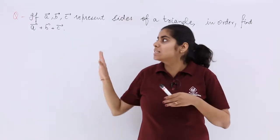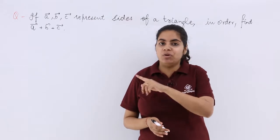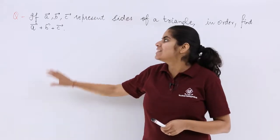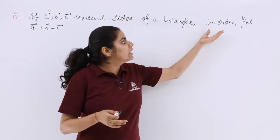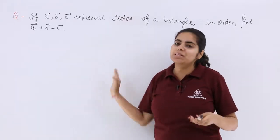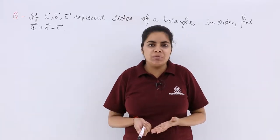A very interesting question asked in the CBSE previous year examination. One mark question can be formed out of this. Let's see this. If ABC represents sides of a triangle in order, find the value of A vector plus B vector plus C vector. Now see, this is a very simple question.